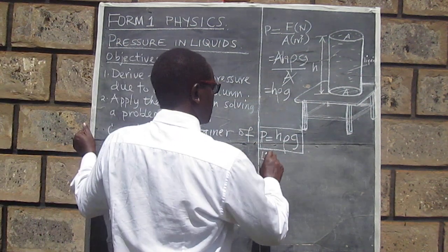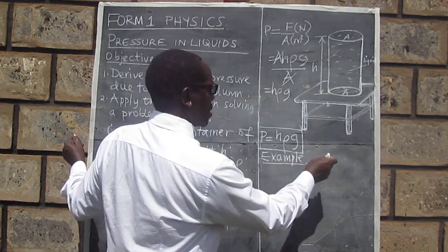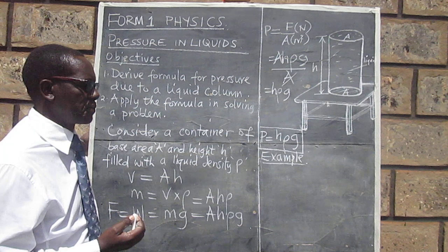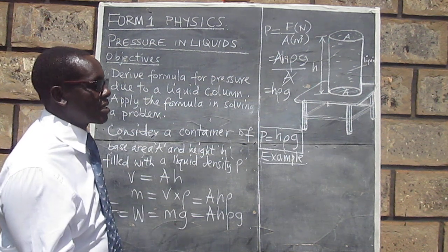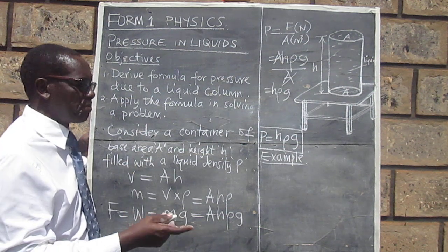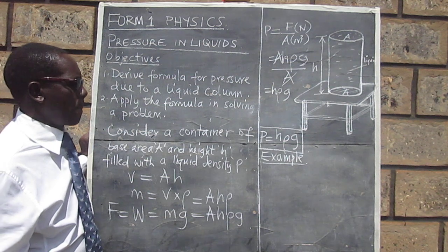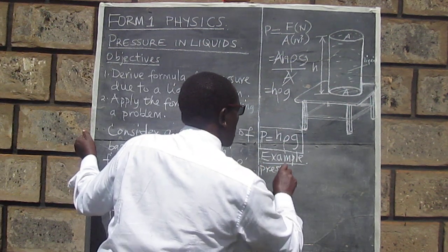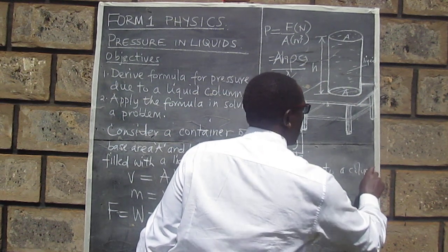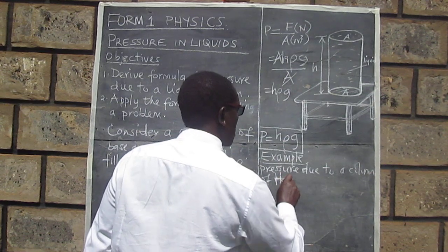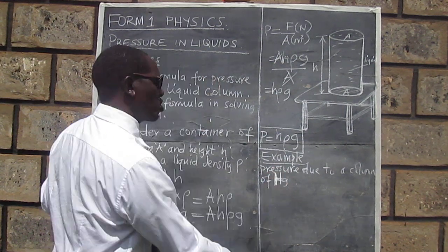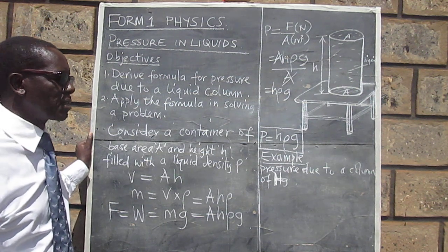We need to look at an example now, and we will take a very straightforward one. Let's think of a column of mercury one meter long. For us to get the pressure, we need to know the density of mercury and the acceleration due to gravity, because we are told the column is one meter long — that is the vertical length. So we are finding the pressure due to a column of mercury, written in symbol form as Hg, one meter long.